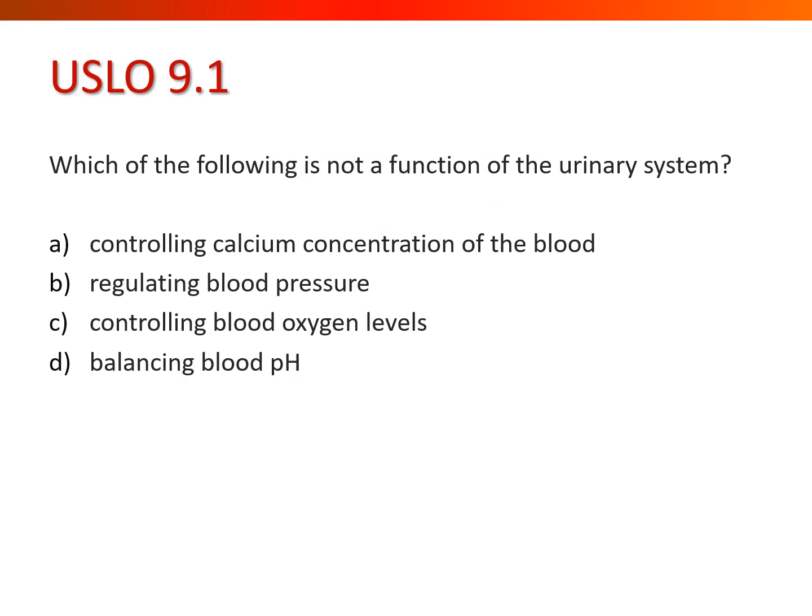So which of the following is not a function of the urinary system? Is it controlling calcium concentration in the blood, regulating blood pressure, controlling blood oxygen levels, or balancing blood pH? Which one does the urinary system not do? Well, hopefully you said it does not control oxygen levels.